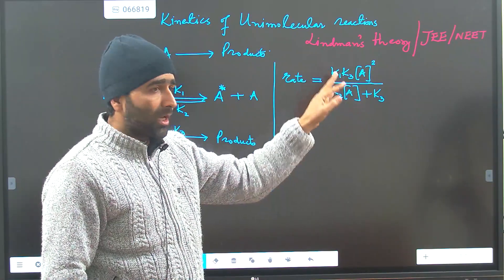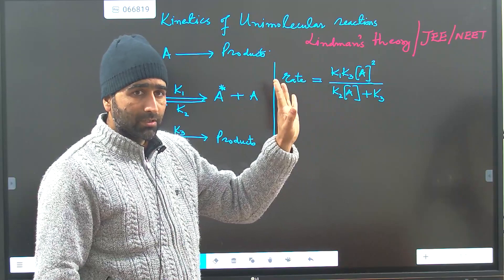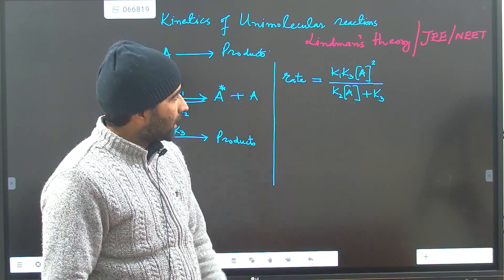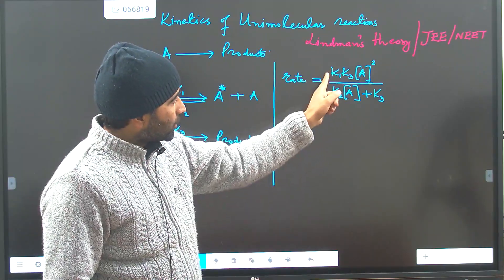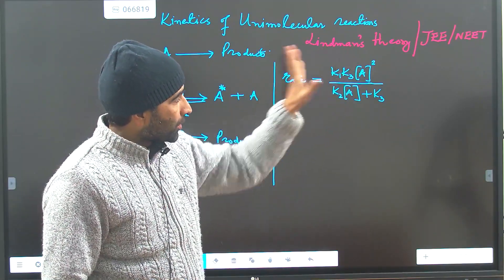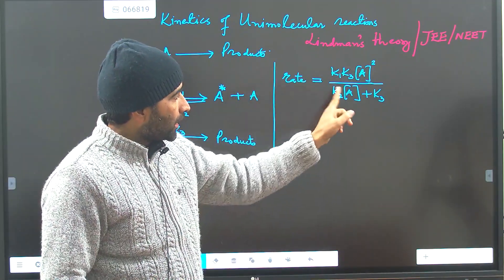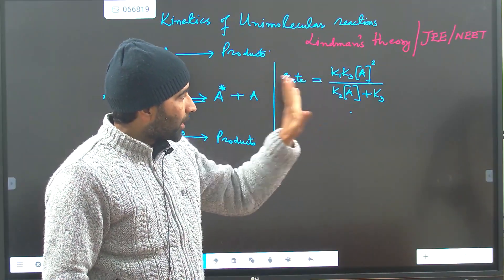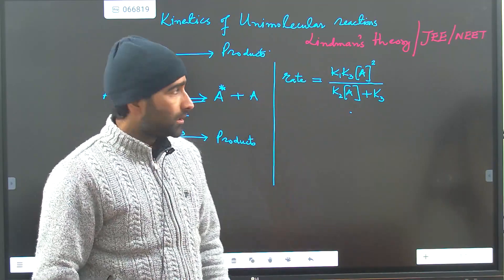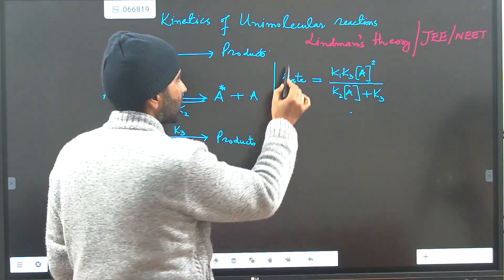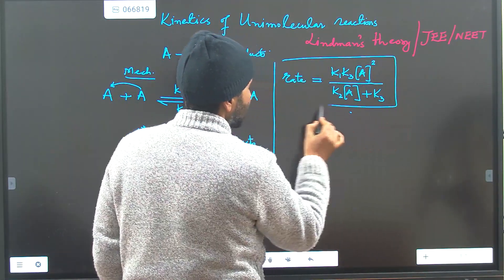The rate equation involves K3 in the numerator. Where two A terms are multiplied you have A squared, and where they are not multiplied you have A to the first power. This is the Lindemann rate equation for the unimolecular reaction.